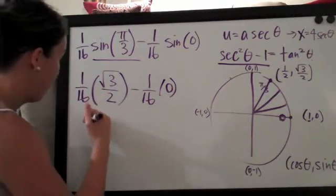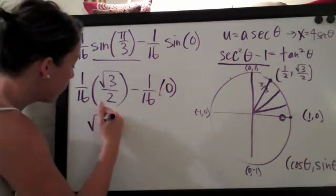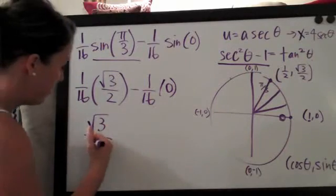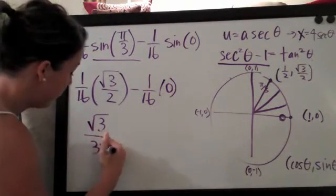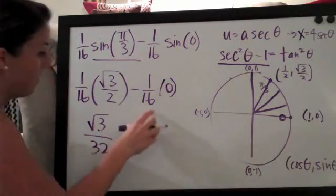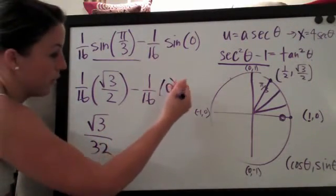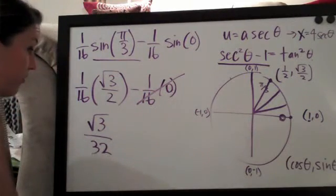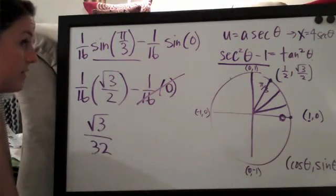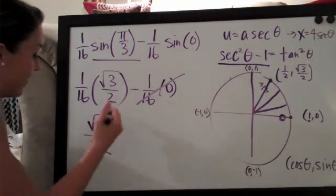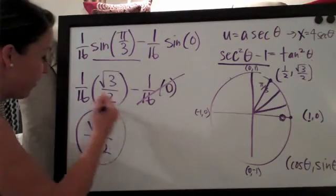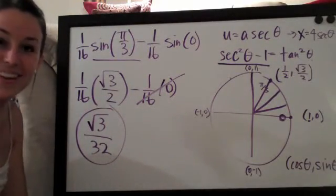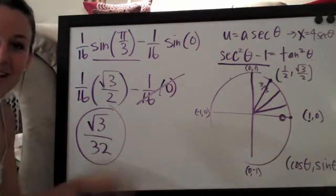One times the square root of three over two: sixteen times two is thirty-two. And since we have zero multiplied through, that term just cancels. Finally, our final answer is the square root of three over thirty-two. See you guys next time!